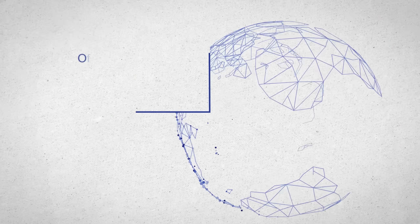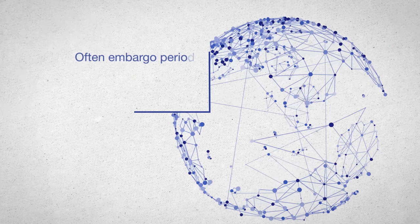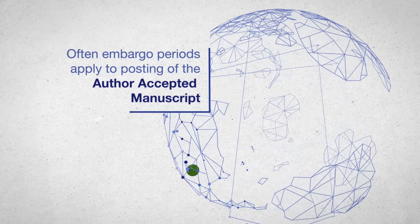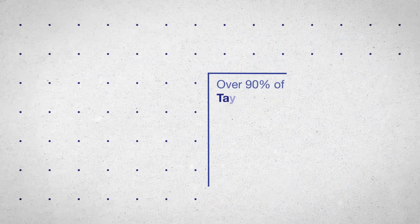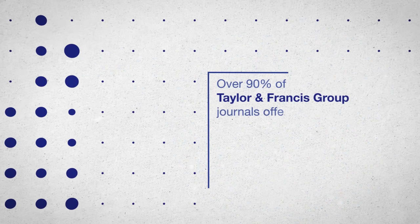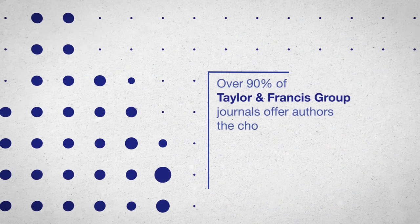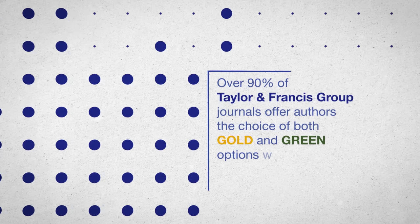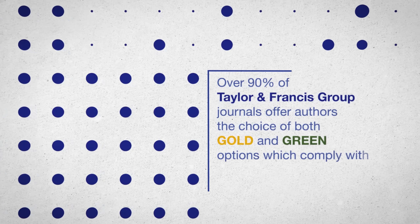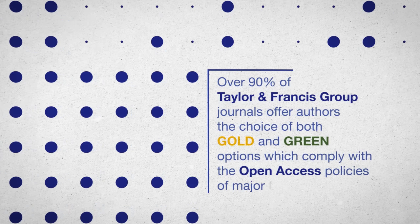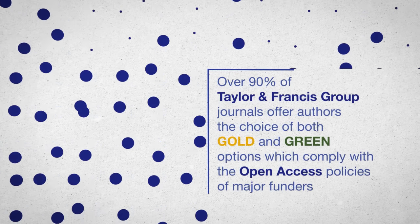Often embargo periods apply to posting of the author-accepted version. Over 90% of Taylor & Francis group journals offer authors the choice of both gold and green options, which comply with the open access policies of major funders.